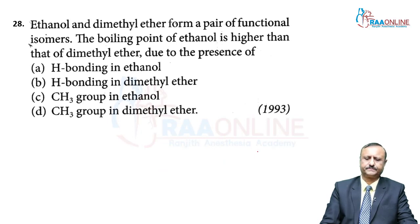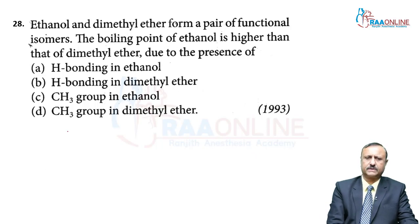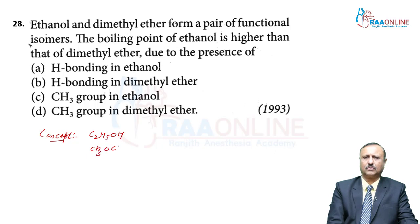Question 28: Ethanol and dimethyl ether are called functional isomers. Ethanol is C₂H₅OH and dimethyl ether is CH₃OCH₃; the molecular formula of both is C₂H₆O — same molecular formula but different functional groups. Therefore they are called functional isomers.